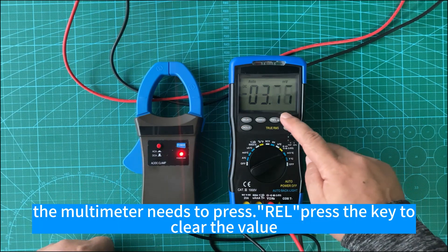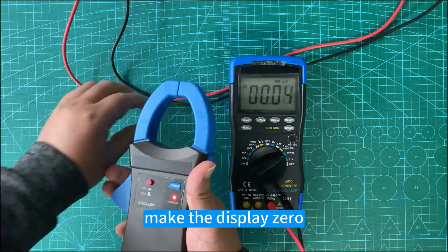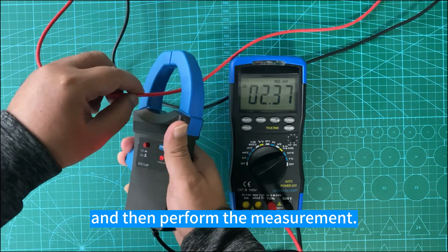Before DC current measurement, the multimeter needs to press the rail key to clear the value, make the display zero, and then perform the measurement.